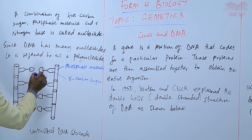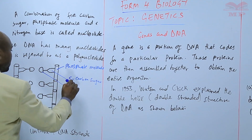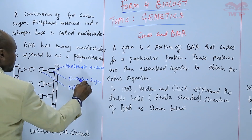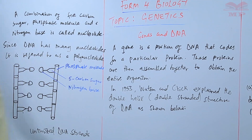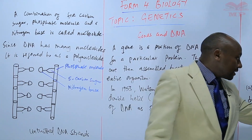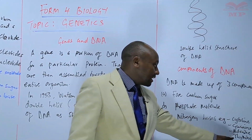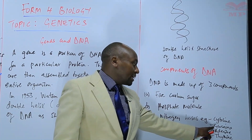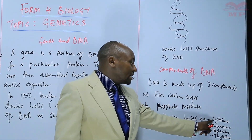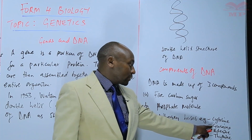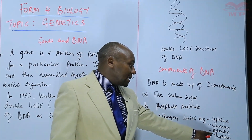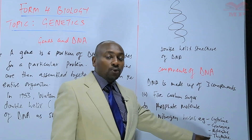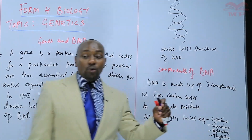Inside here we have the nitrogen base, of which we are saying the nitrogen bases are four: we have guanine, adenine, thymine, and cytosine. The amount of cytosine and guanine are equal, and therefore guanine pairs with cytosine. Adenine and thymine pair up together because the amount of adenine and thymine are equal.